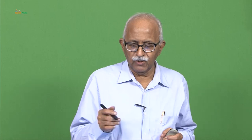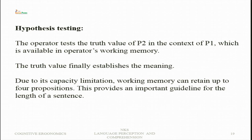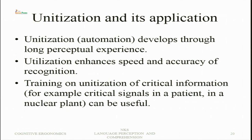P1 is a hypothesis formed on the basis of the sentence available in the operator's working memory. The role of working memory is very important — it is a very short-lived memory unless rehearsal is done. Due to its capacity limitation, working memory can retain up to four propositions. This provides an important guideline: sentences should not be long and should not contain more than three or four propositions. Unitization is the automation of bottom-up processing and requires a long perceptual experience.